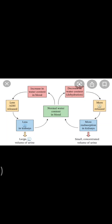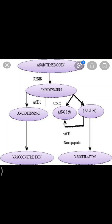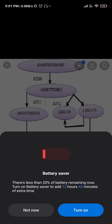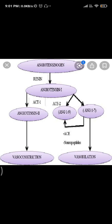The second regulation is the juxtaglomerular apparatus (JGA) regulation, also known as the renin-angiotensin mechanism. The JGA is a special sensitive region formed by cellular modification in the distal convoluted tubule and afferent arteriole. A fall in GFR activates the JGA cells — the juxtaglomerular cells — to release renin.